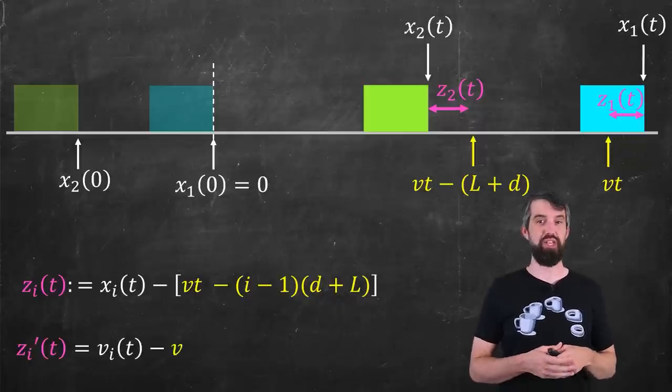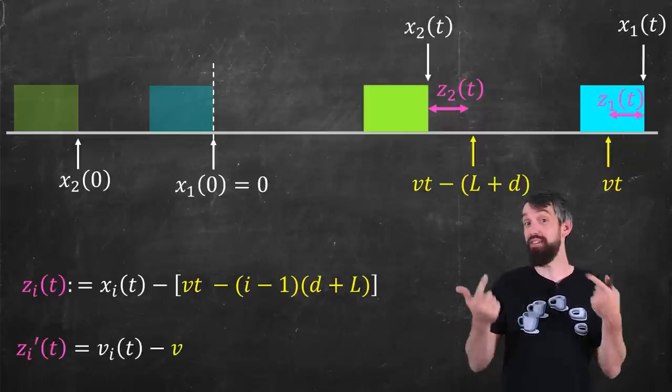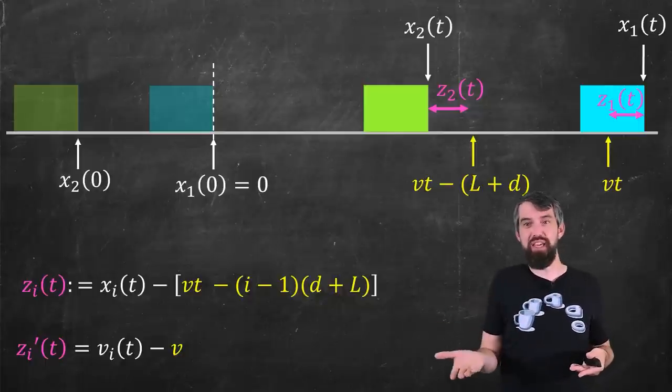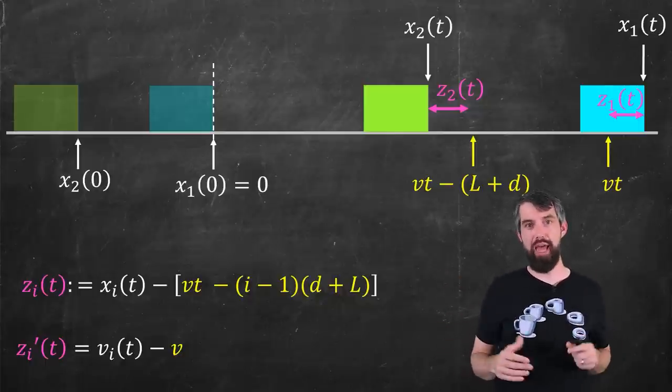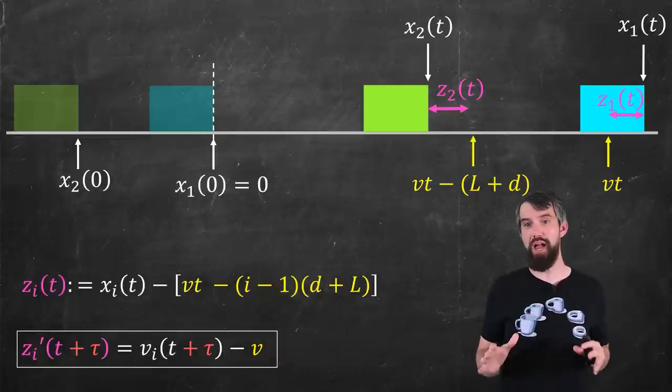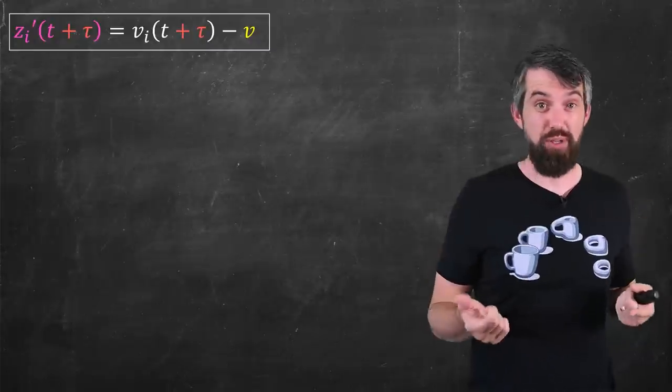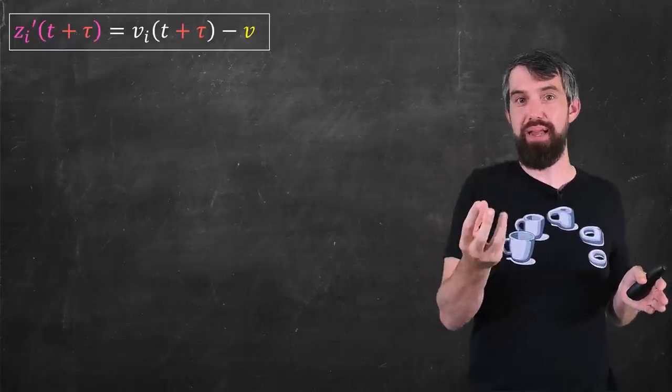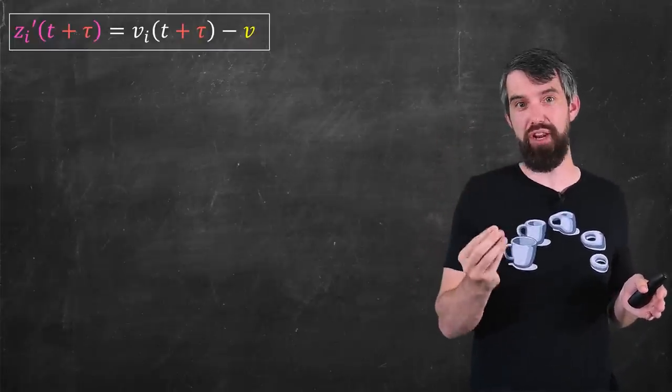And I can take derivatives of this pretty easily. For example, one derivative is just going to be, well, derivative of x_i gives me v_i, derivative of minus vt is minus v, and there is no t's in the rest of it, so this is all I have. And likewise, I could shift this from t to t plus τ, that would be fine as well. So this is my change of variable between the x_i's, v_i's, and so forth, and the z_i's measuring this perturbation from equilibrium.